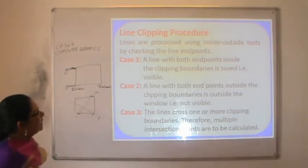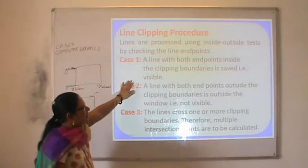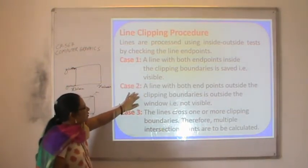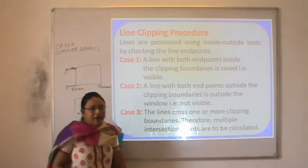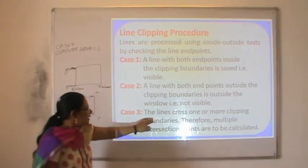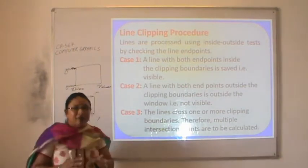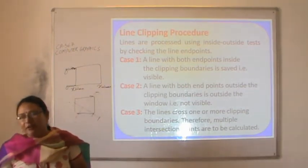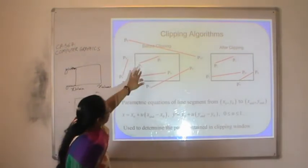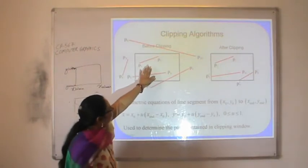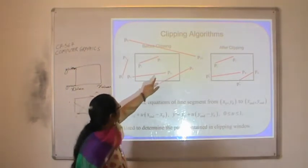Lines are processed using an inside-outside test by checking the line endpoints. Case 1: a line with both endpoints inside the clipping boundaries is saved as it will be visible. Case 2: a line with both endpoints outside the clipping boundaries is outside the window and will not be visible. Case 3: lines cross one or more clipping boundaries, so multiple intersection points must be calculated. After clipping: p1-p2 lines are inside (case 1), p9-p10 is case 2, and p7-p8 and p5-p6 are case 3.